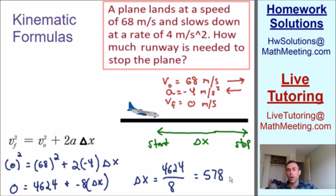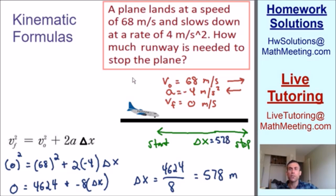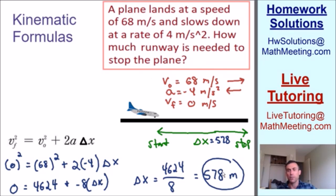Solving for delta x, delta x is equal to 4624 divided by 8, which equals 578. Our units are in meters, so delta x equals 578 meters. This is the answer to our question: how much runway is needed to stop the plane? 578 meters.